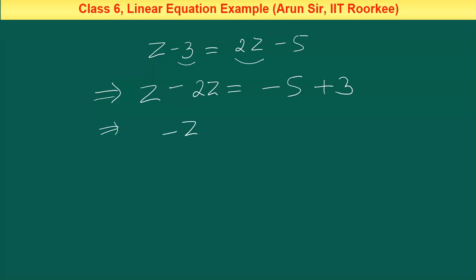So, z minus 2z will be minus z is equal to minus 5 plus 3 that will be minus 2. Right.